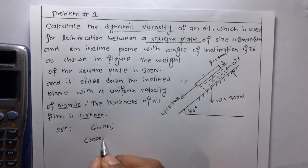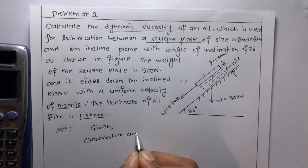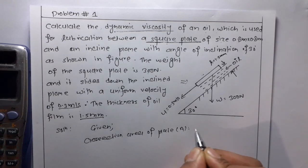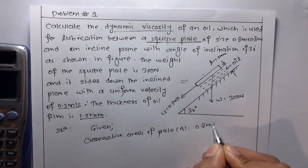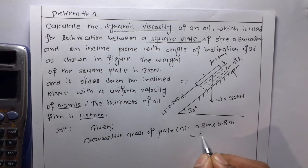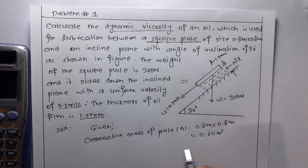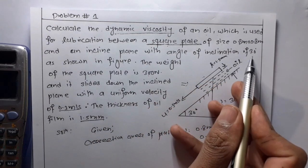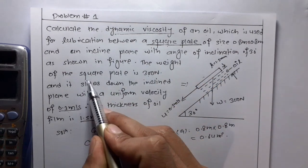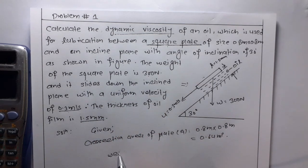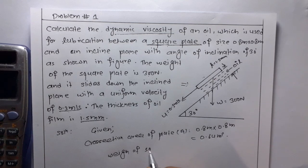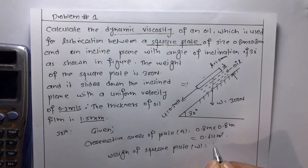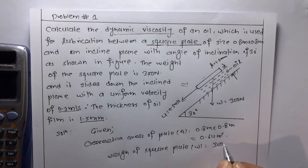That means the cross section area of plate A is equal to 0.8 meter into 0.8 meter which is 0.64 meter square and an inclined plane with an angle of inclination is 30 degrees. The weight of the square plate W is equal to 300 Newton.